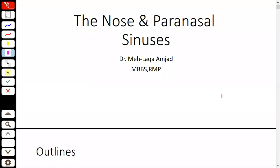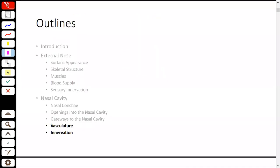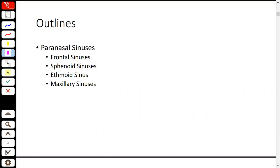Today's lecture is a continuation of the nose and the paranasal sinuses. We will study the nasal cavity, we will study the innervation, and we will discuss some important things about paranasal sinuses. There are 4 main paired sinuses: frontal, sphenoid, ethmoidal, and maxillary sinuses.